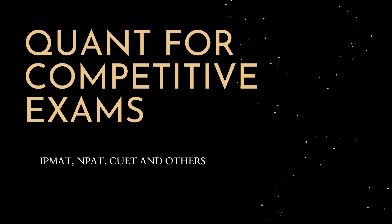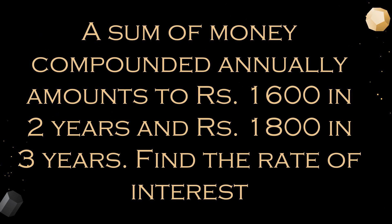Quant for competitive exams. In this series we shall be solving yet another question. A sum of money compounded annually amounts to rupees 1600 in 2 years and rupees 1800 in 3 years. Find the rate of interest.